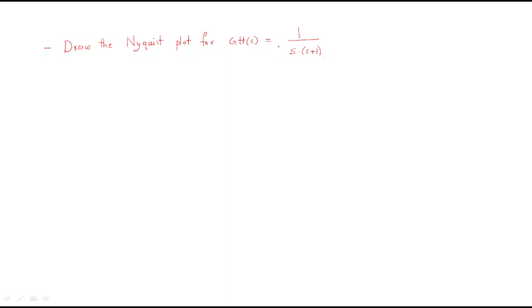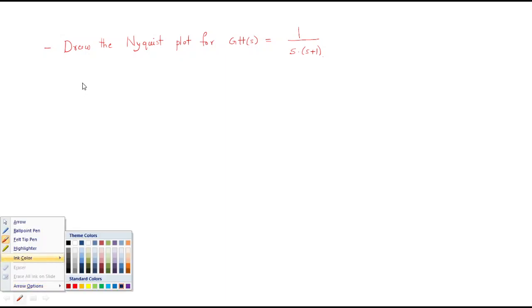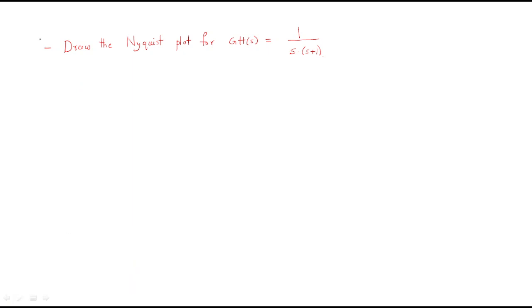Before drawing this, we will discuss some points about the Nyquist plot. Generally, the Nyquist plot is nothing but two times the polar plot. So we should extend the polar plot two times and then the Nyquist plot will come. Whenever you start the Nyquist plot, you should draw the polar plot first.